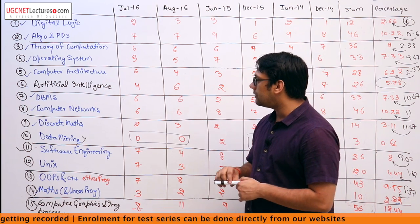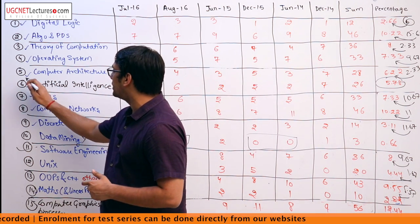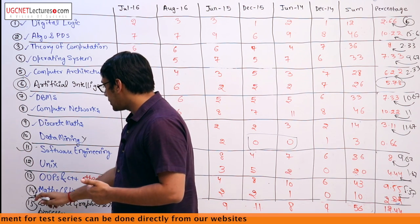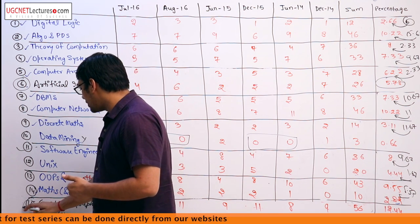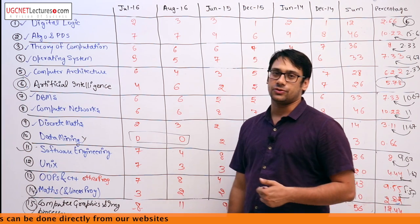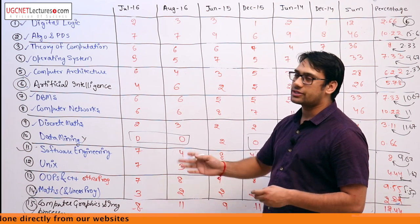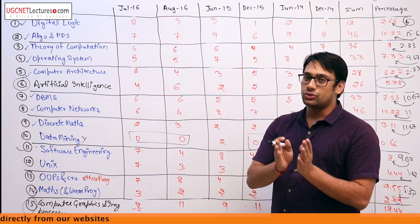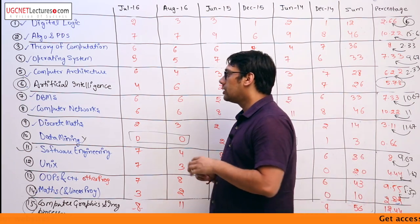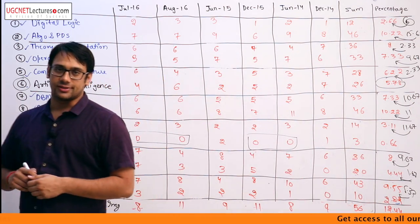Now we can see that in Paper 3, there are two subjects which are exclusively there and not in Paper 2 — that is, artificial intelligence and computer graphics and image processing. Otherwise, all the other subjects are present in both Paper 2 as well as in Paper 3. Let us look at these subjects in more detail.